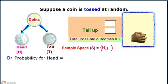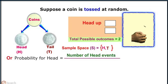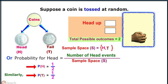So the probability for head is equal to number of head events divided by the sample space, which comes out to be half. Similarly, probability of getting a tail is also half.